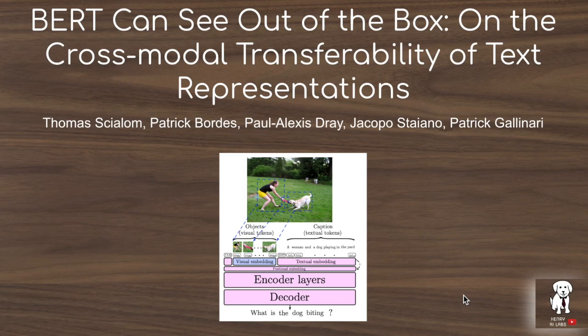This video explores the paper 'BERT Can See Out of the Box,' looking at how well BERT can attend to visual embeddings coming straight from a Faster RCNN model without much fine-tuning of the visual representations. This vision-language BERT model is tested on visual question generation.